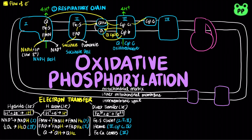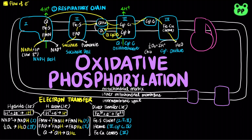Complex 4 is also known as cytochrome oxidase, in which electrons from cytochrome C pass through an iron-copper center and reduce molecular oxygen to water. Therefore, the purpose of oxygen in aerobic respiration is to act as the final electron acceptor. Oxygen has the highest reduction potential of all the electron carriers in the respiratory chain, meaning it has high affinity for electrons, and its reduction releases energy coupled to proton transport into the intermembrane space.